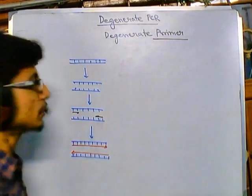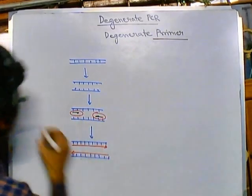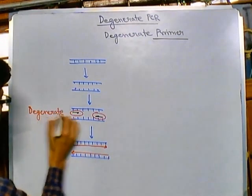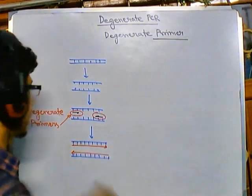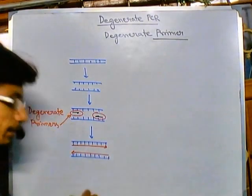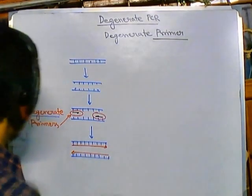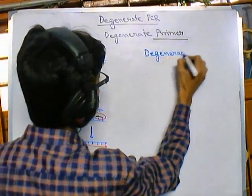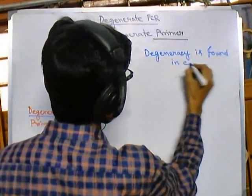In the case of degenerate PCR, we use degenerate primers. The term 'degenerate' comes from the codon degeneracy found in genes. We know that degeneracy is found in codons.